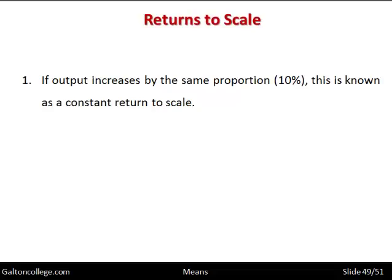If output increases by the same proportion — say 10% — it's known as a constant return to scale. So if a company grows by 10% and output also grows by 10%, that's a constant return to scale.